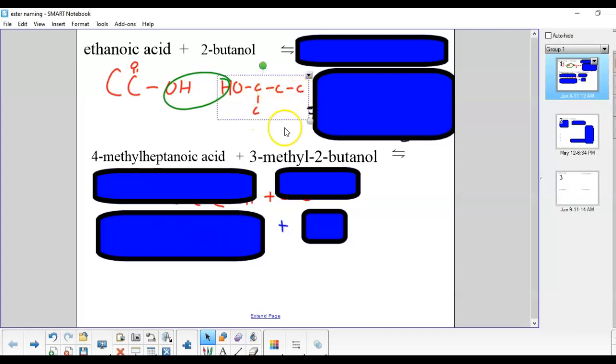When we want to name the ester, and in a lot of these reactions I'm leaving out the water, we want to put that alcohol name first. We want to chop off the anol ending and just make it yl. So we're going to have two-butyl, and then we add the ethanoic acid but we chop off the anoic and we add an oate.